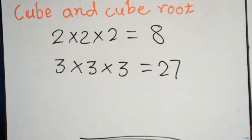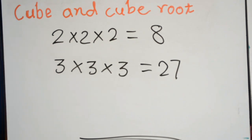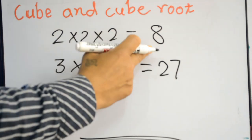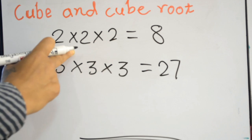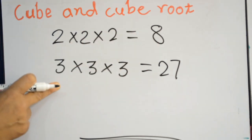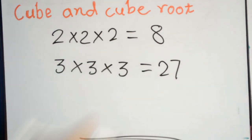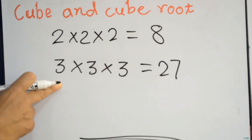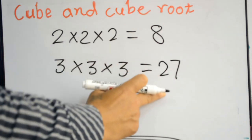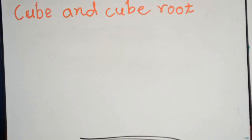Since three identical 2s make 8, the number 2 is called the cube root of 8. Similarly, since three identical 3s make 27, this 3 is the cube root of 27. Now let's look at how to find cube roots.